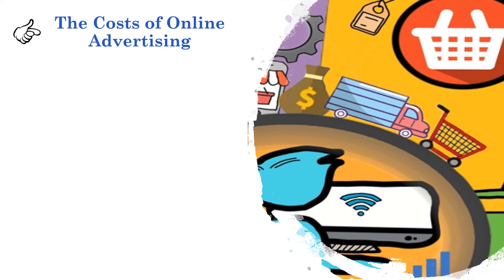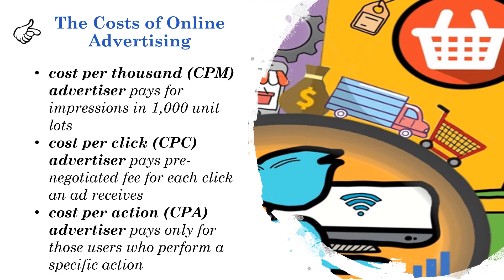The cost of online advertising includes: CPM, or cost per thousand, where advertisers pay per impressions in 1,000-unit lots; cost per click, where the advertiser pays a pre-negotiated fee for each click an ad receives; and cost per action, where the advertiser pays only for users who perform specific actions.